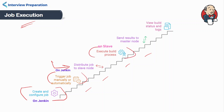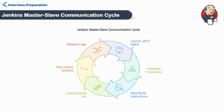The build process then begins on the slave node. Once the build is completed, the result is sent back to the master node, and the user can view the build status and the logs.